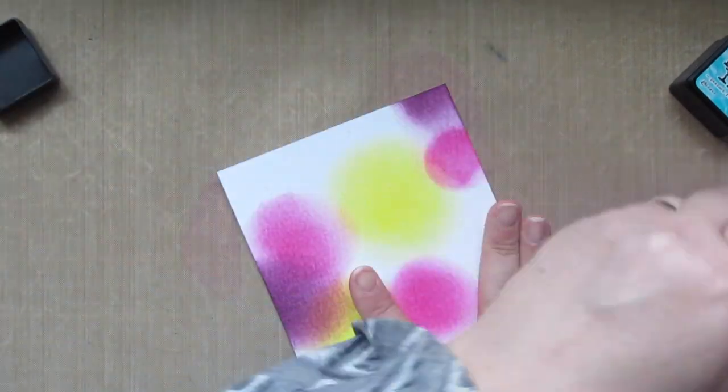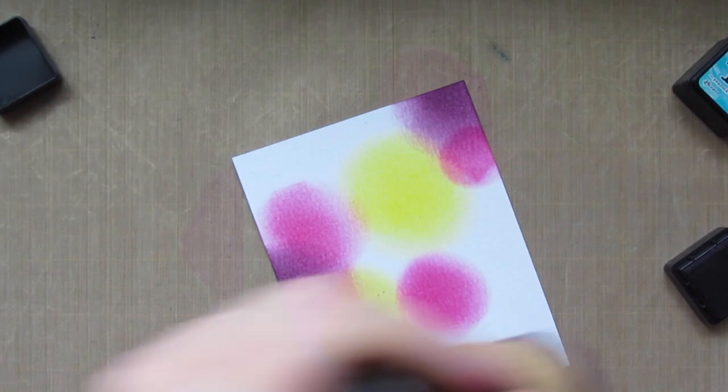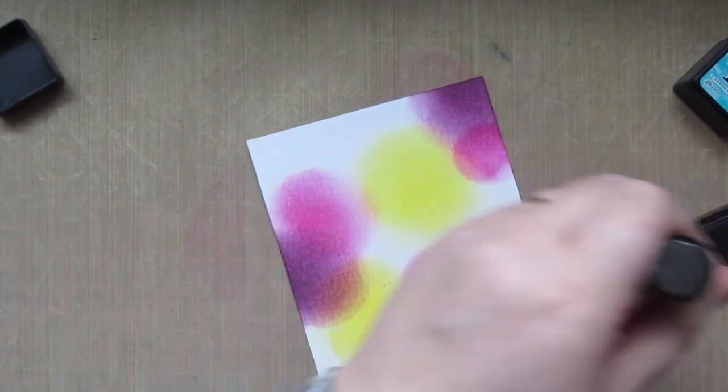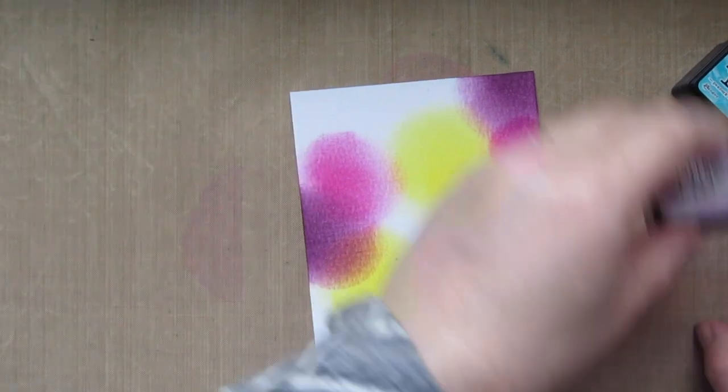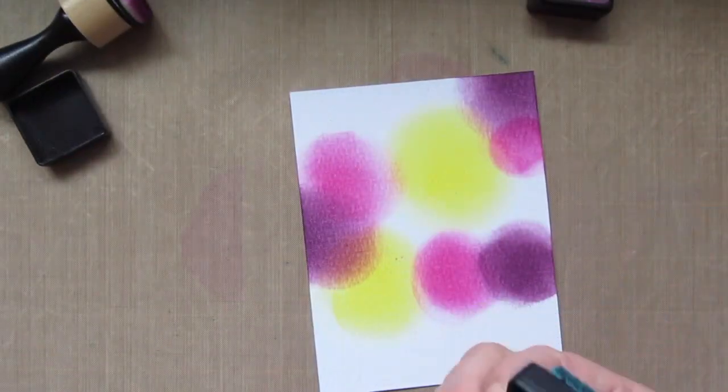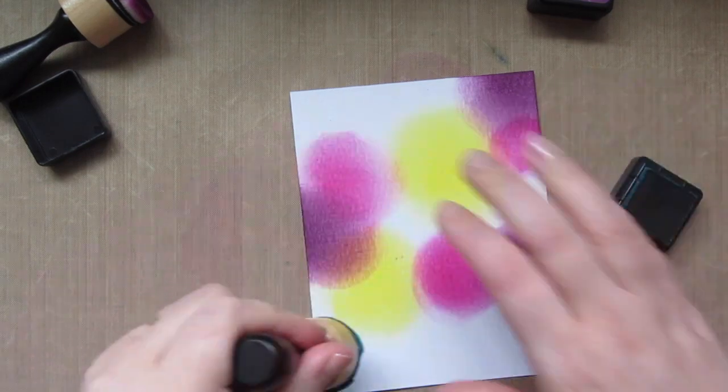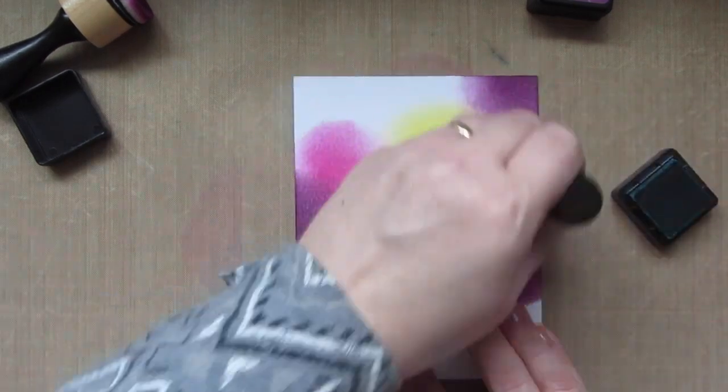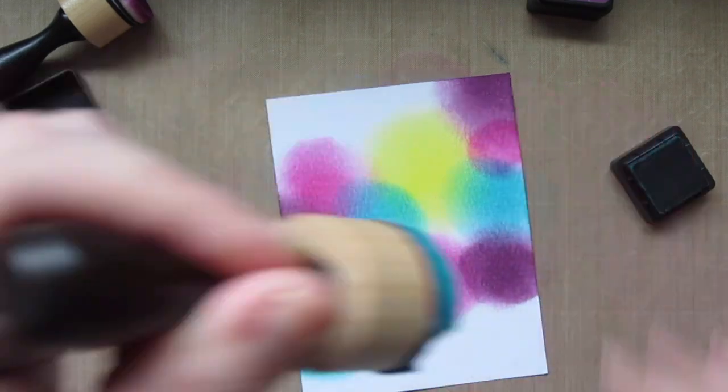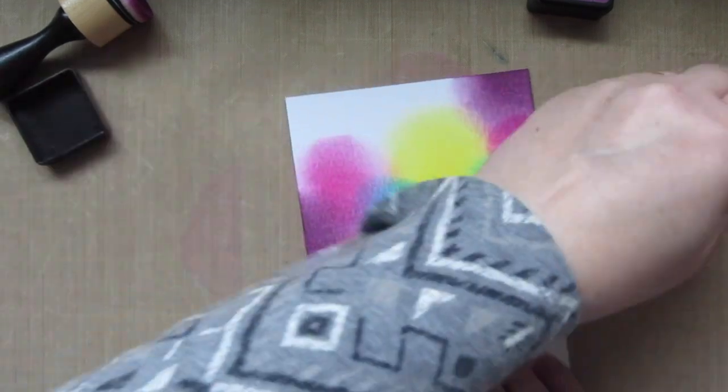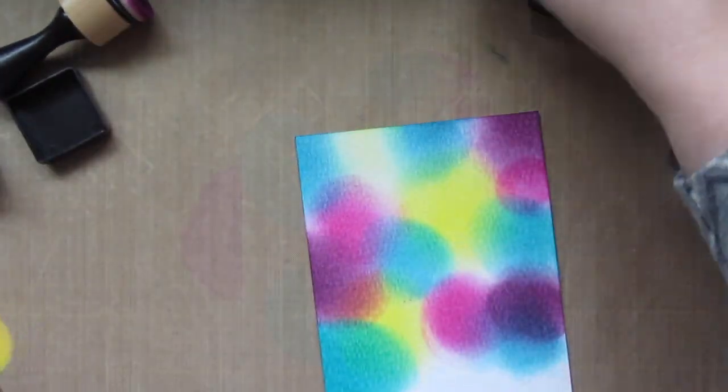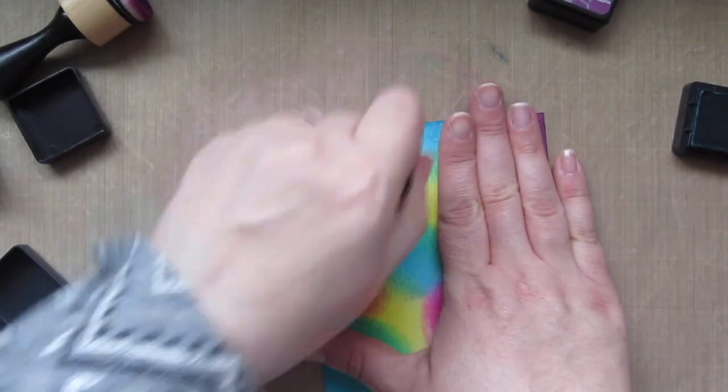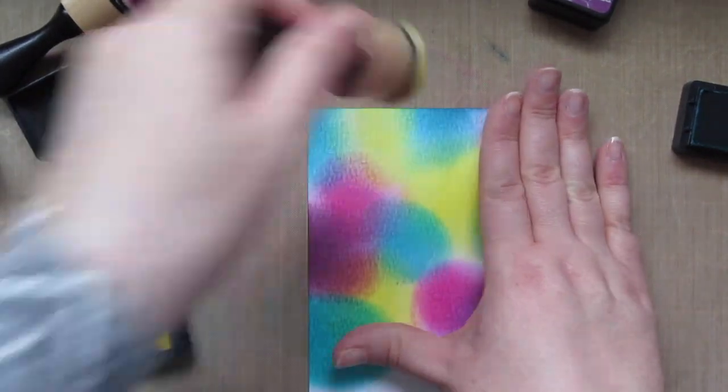This next color is Seedless Preserves, and I'm just trying not to overlap the yellow too much with the purple, since yellow and purple make brown, but I did a little bit, but that was okay. It didn't get too dark, and like I said, a lot of this you won't even be able to see in the end, so if you mess up at this stage, don't worry about it. But now I'm just going in with my last shade, and that is Peacock Feathers. I'm not worried too much about the bottom area there, because that's going to get covered up, but I'm just going to fill in that last little spot with the Squeezed Lemonade.